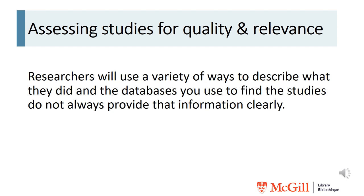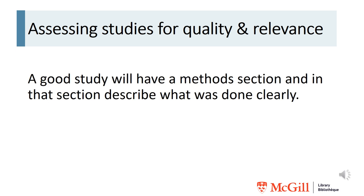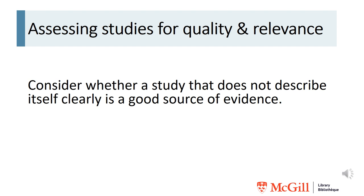When writing about their studies, researchers will use a variety of ways to describe what they did, and the databases you use to find the studies do not always provide information about study design very clearly. Look for clues in how the author describes what they did. A good study will have a methods section, and in that section describe what was done clearly. This way, other researchers can replicate it and hopefully get similar results. Consider whether a study that does not describe itself clearly is a good source of evidence.